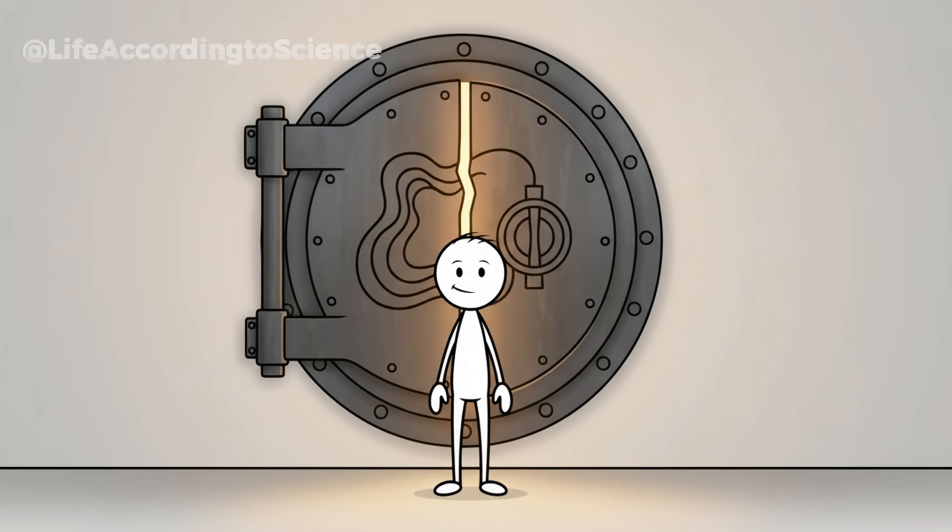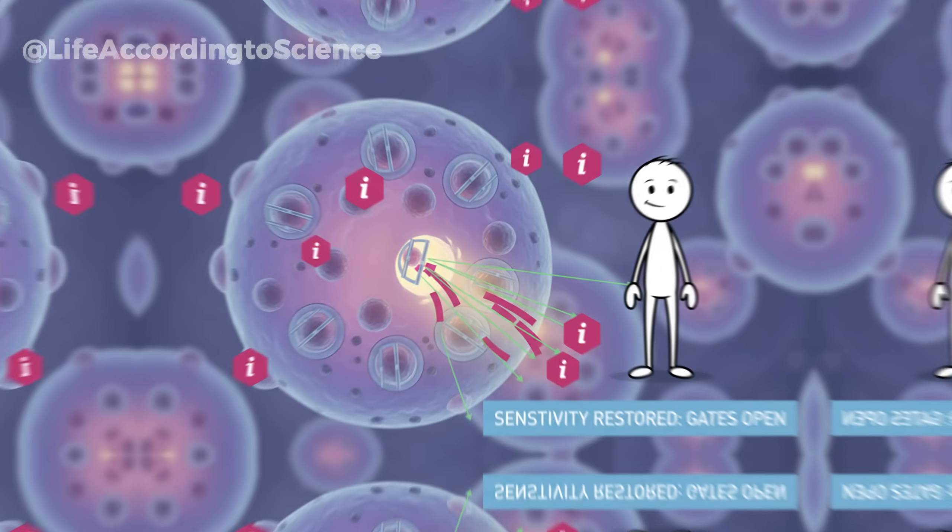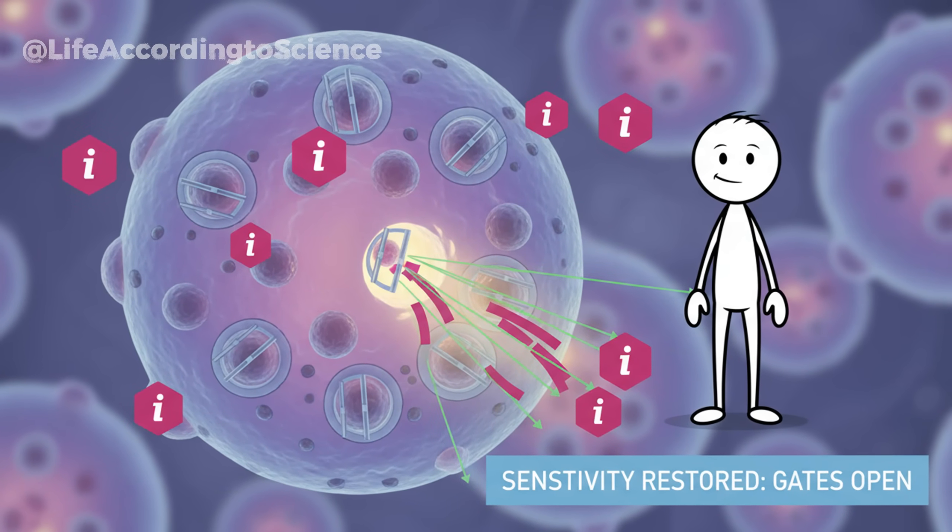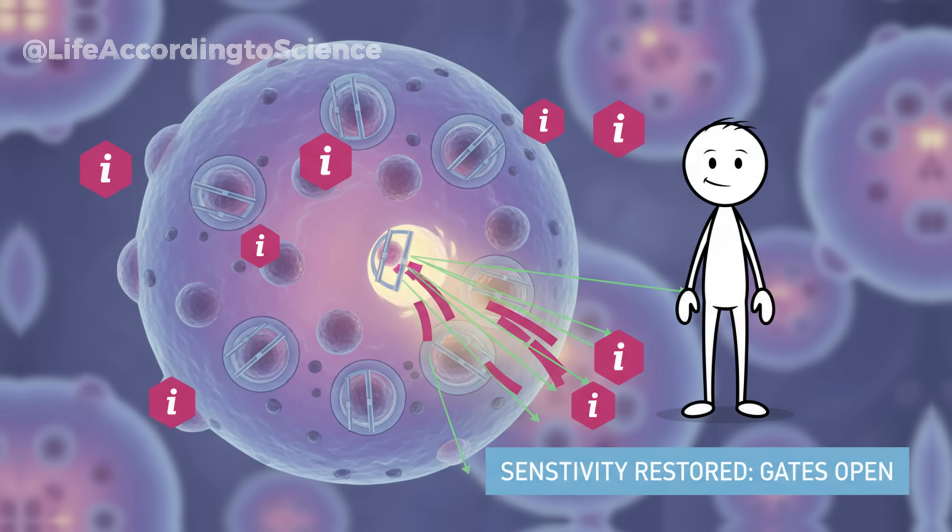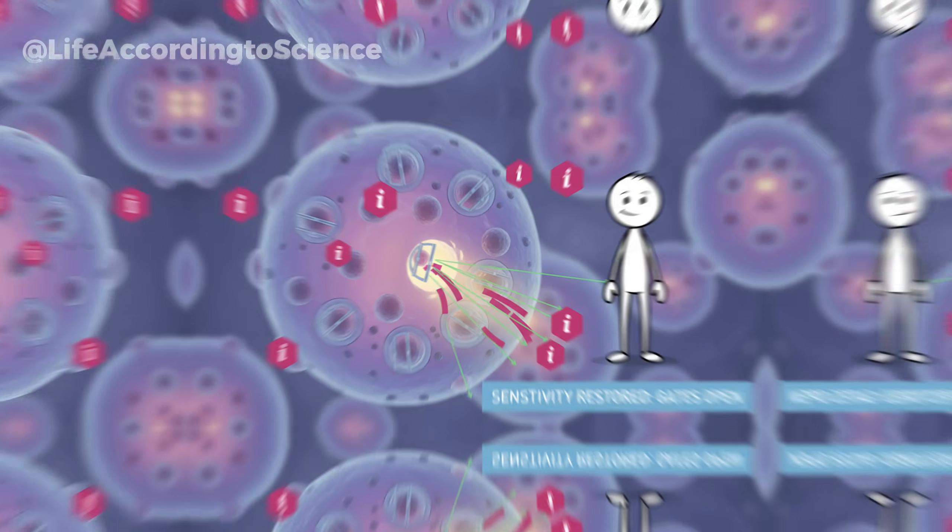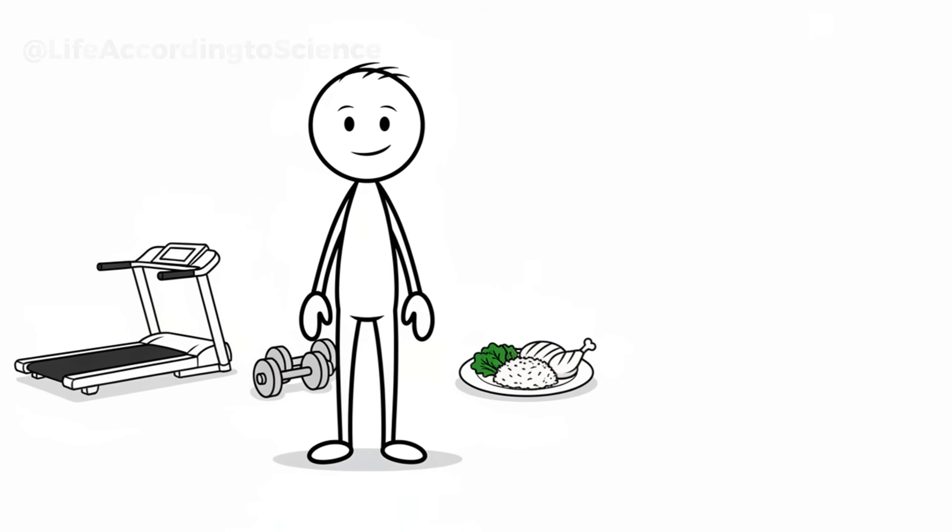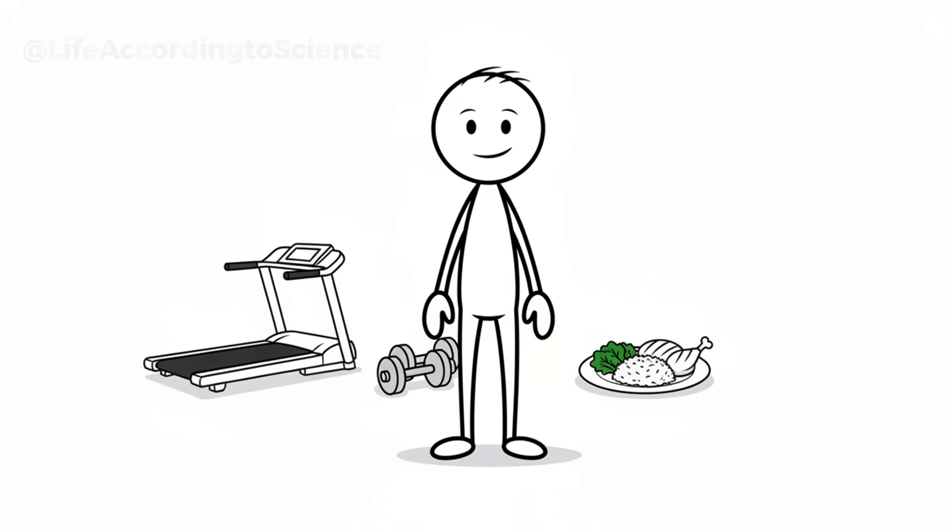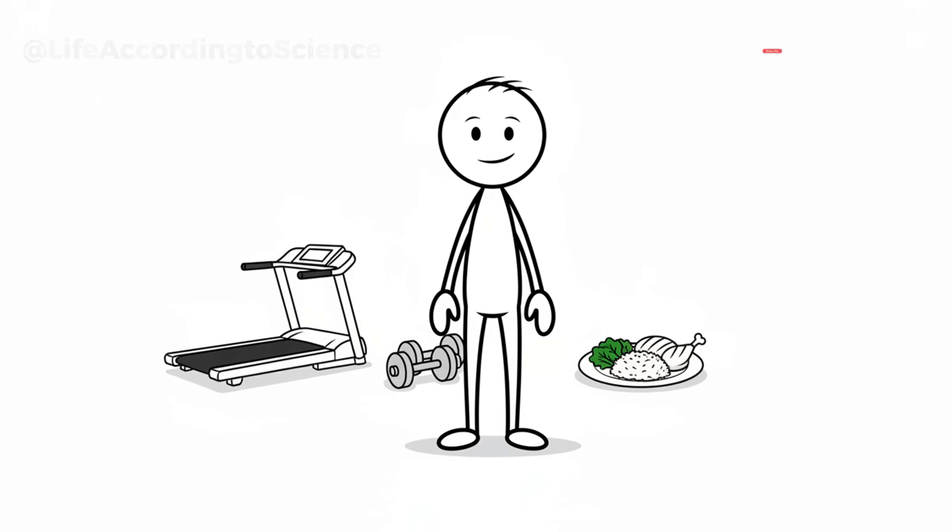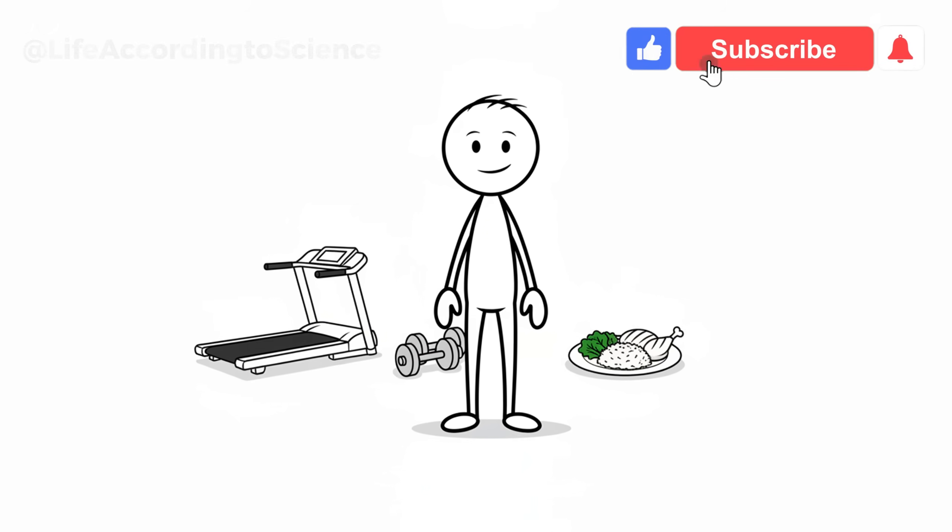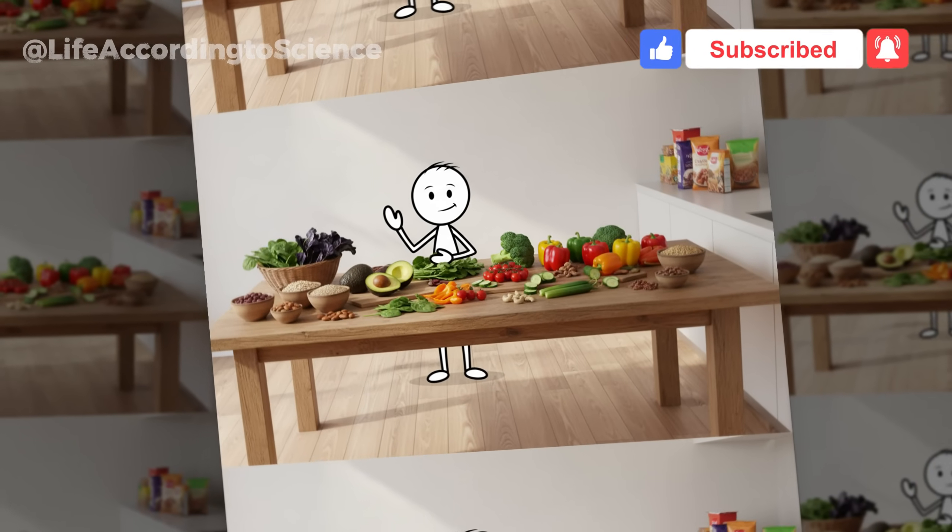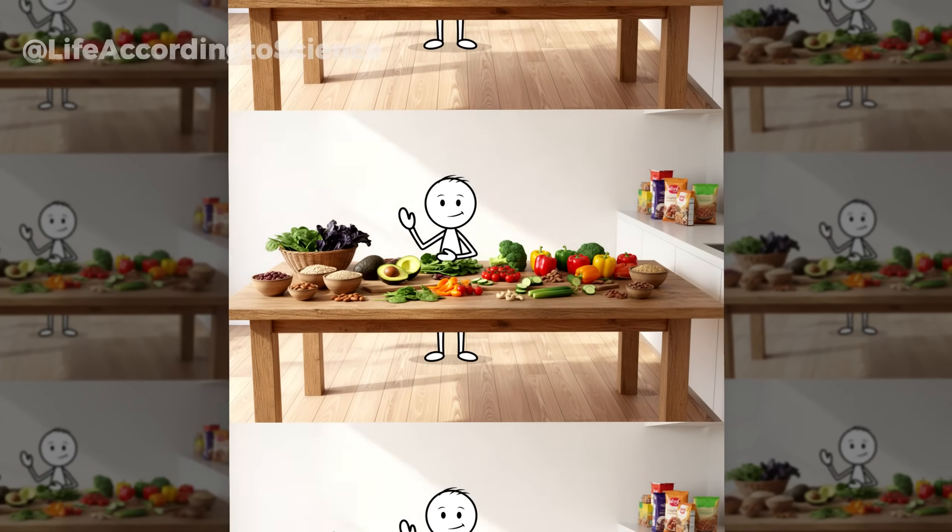Insulin resistance is often the invisible wall between you and fat loss. When your cells stop responding to insulin properly, your body pumps out even more of it to compensate. High insulin levels block fat burning, literally turning off your body's ability to access stored energy. Instead, the body keeps shuttling glucose into fat cells, particularly around the abdomen. This is why some people can exercise daily and eat well, yet still gain belly fat.